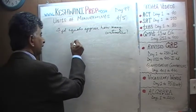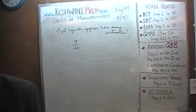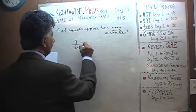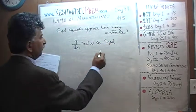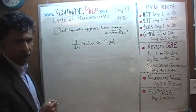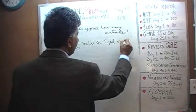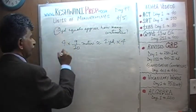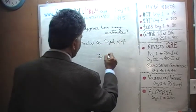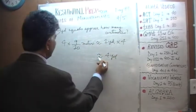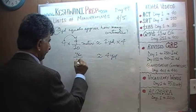We know that about 9 tenths of a meter equals about 1 yard. We don't have 1 yard, we have 4 yards, so multiply both sides by 4. 4 yards approximately equals 4 times 9 is 36 over 10 meters.